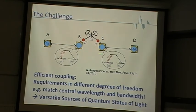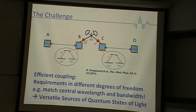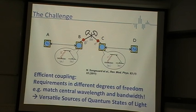For example, in a quantum repeater scenario you have photonic quantum states, memories, and interference of photonic components. To achieve efficient coupling of those physical systems, you must fulfill stringent requirements in different degrees of freedom - for instance, matching central wavelengths and bandwidths. This was also pointed out by the previous speaker in the quantum memory scenario.